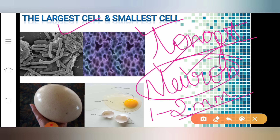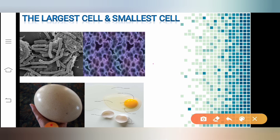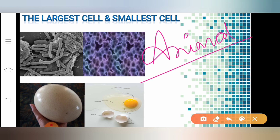One more important thing to understand is that the size of the cell varies in both plants and animals. It does not matter how big the animal or plant is — the size of the cell has no relationship with the size of the body of the animal or plant. I cannot say that if the size of the animal is big, that animal must have very big nerve cells or very big fat cells. It is completely different.